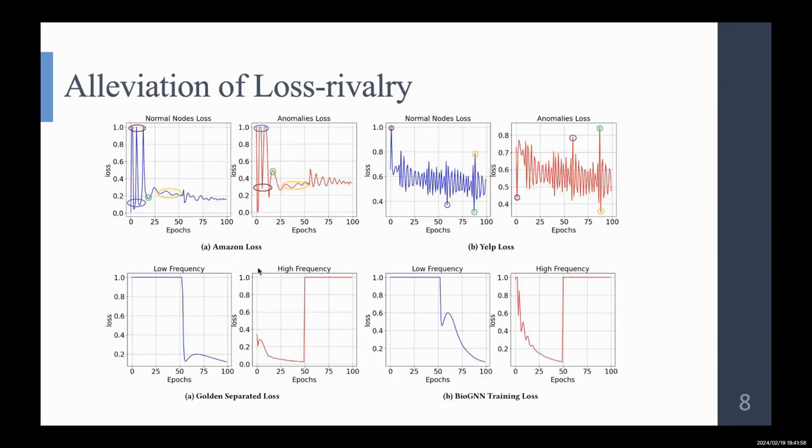And here is the alleviation results. The first row is the initial figure where the model suffers from loss rivalry.